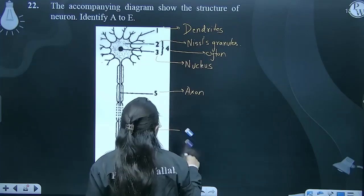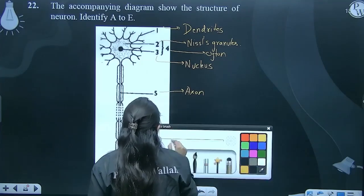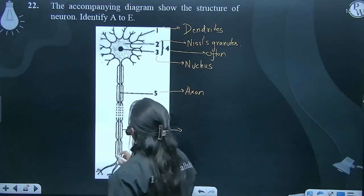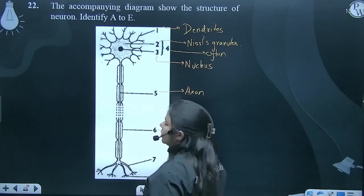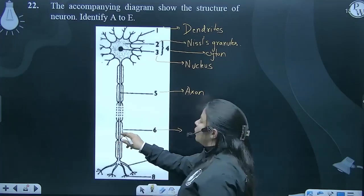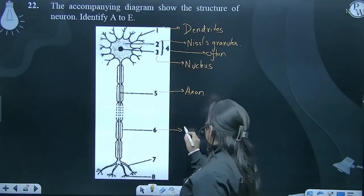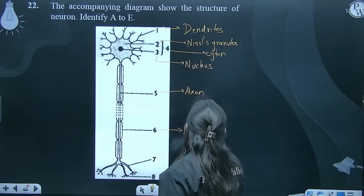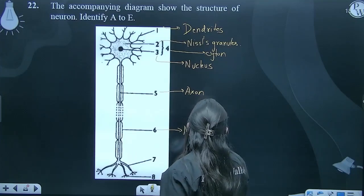Let's call it myelin sheath, not Schwann cell, because if it was Schwann cell, the nucleus would be shown. If the nucleus is not labeled, that means the diagram is asking about myelin sheath.